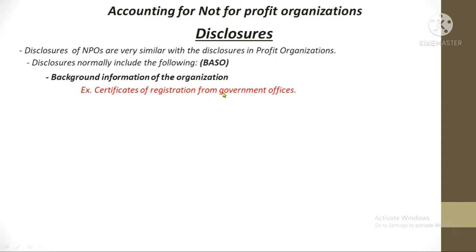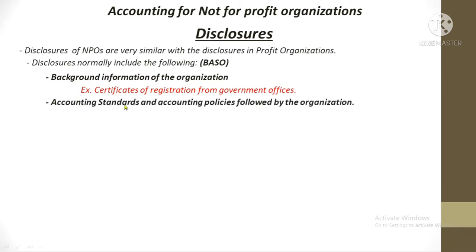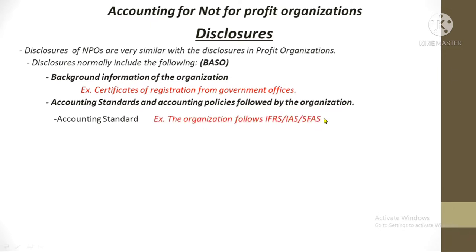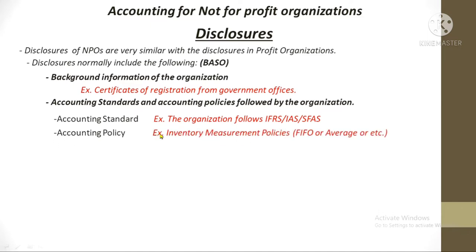B is for background information of the organization — like mayor's permit details, registration certificate details, information proving legal existence, date of incorporation, place of business, and similar details. A is for accounting standards and accounting policies — an organization should disclose the standards it follows, such as IAS, IFRS, SFAS, or other standards, and its policies like how inventories are measured: FIFO, weighted average, or any acceptable measurement.